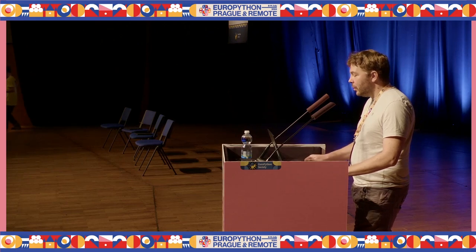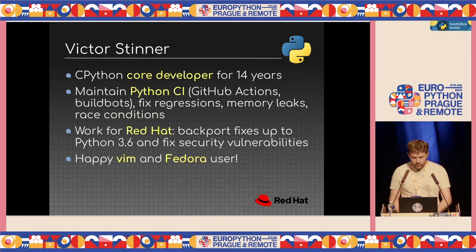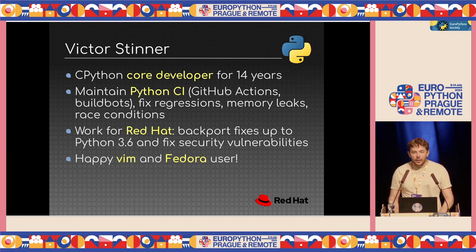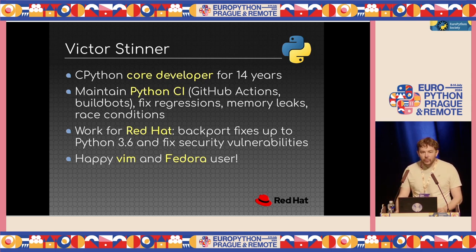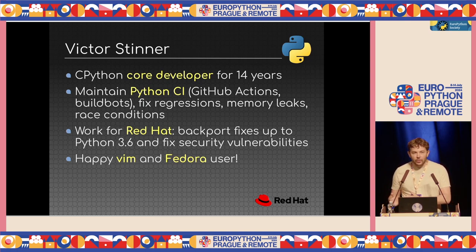I'm very happy to be here with you, and I'm going to talk about the Python C API. My name is Victor Steiner. I'm a Python core developer for 14 years, and I'm maintaining the Python continuous integration on Python upstream — fixing issues on GitHub Actions and buildbot workers, fixing regressions, memory leaks, and race conditions. I'm working for Red Hat for 10 years, backporting fixes up to Python 3.6 as we get rid of Python 2, and also fixing and backporting security fixes to all Python versions.